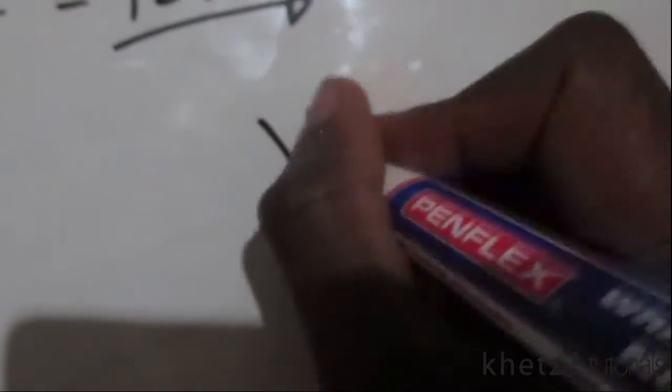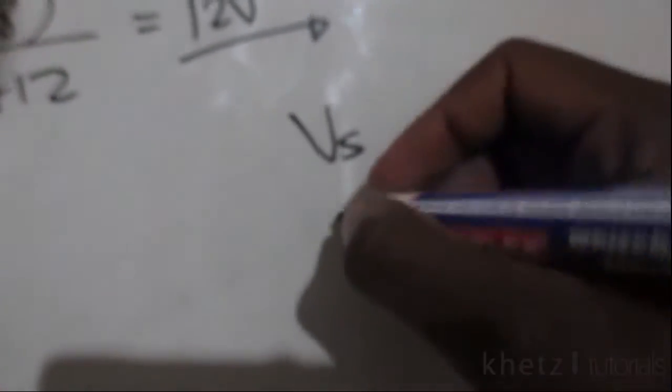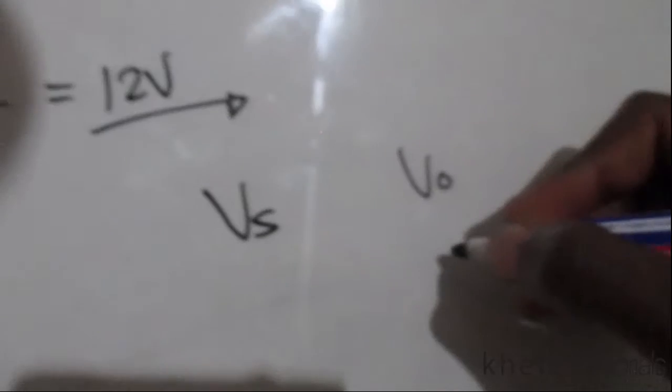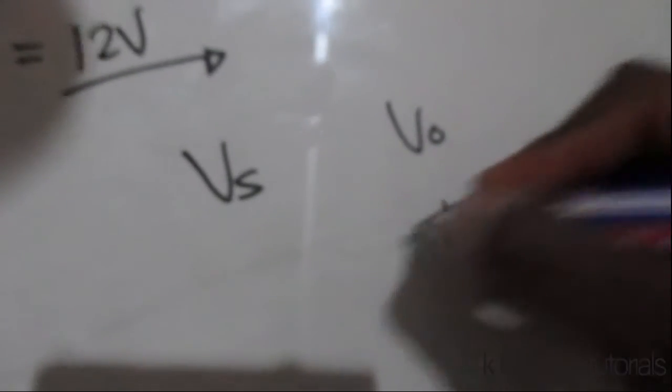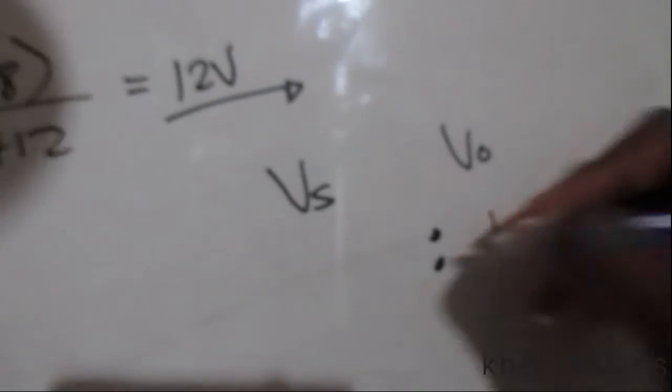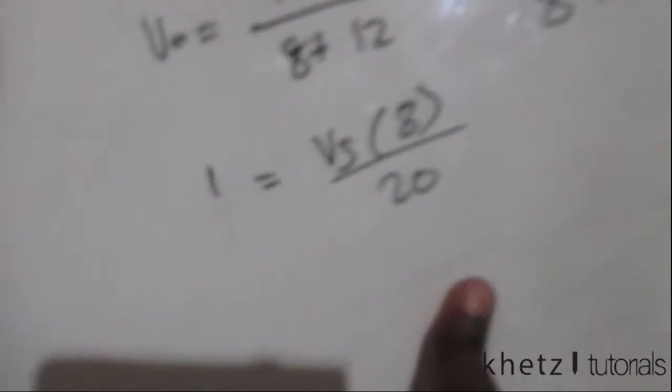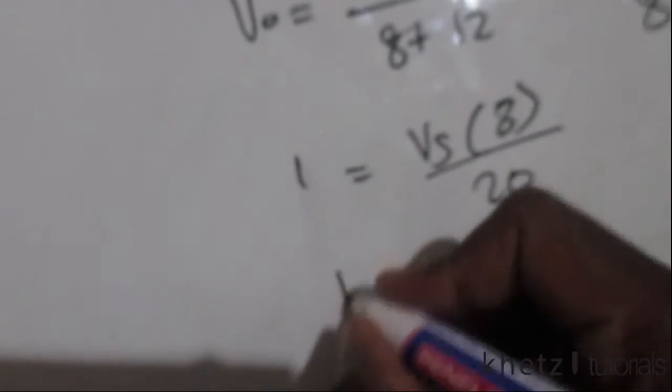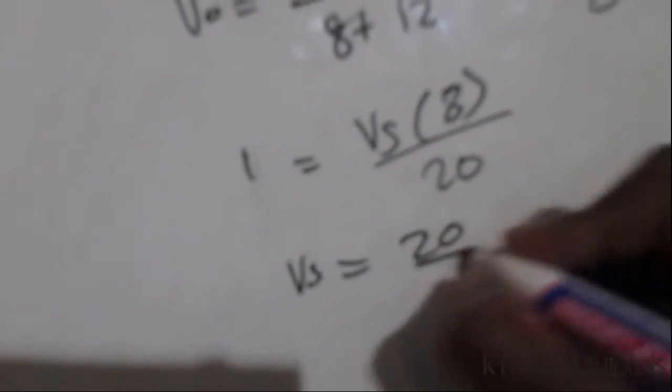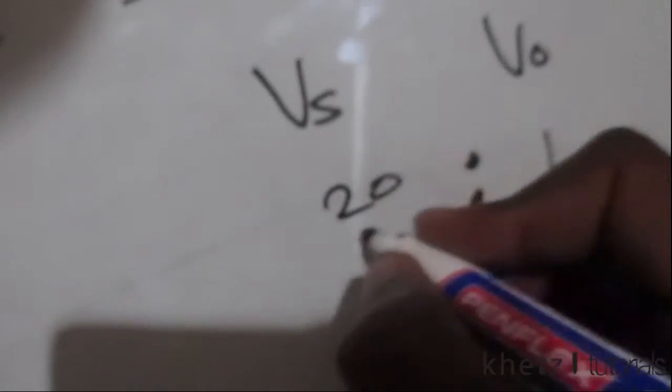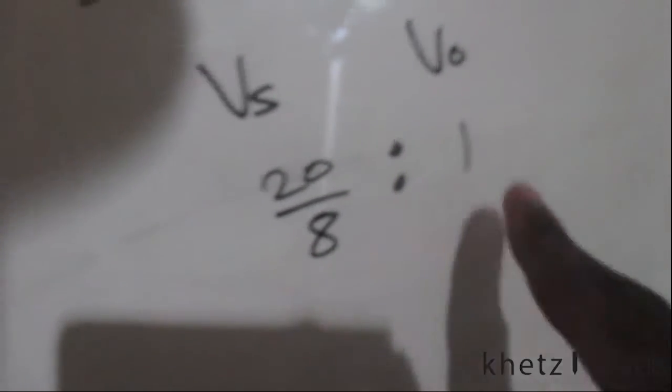Our input is vs. So we assume that vo is 1 volt. What is the vs when we have vo as 1 volt? Let's do that quickly. Our vs would therefore be equal to 20 divided by 8. That would be our vs. So our input would be 20 over 8 to give us a value of 1 volt as vo.